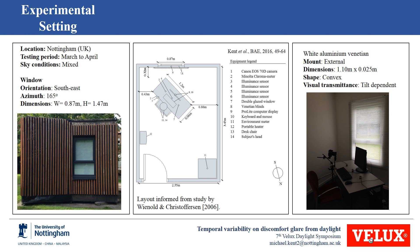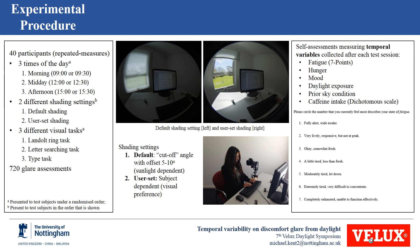Also inside the test room were white Venetian blinds, which could be manually operated by the participants. Before participants arrived, the blinds were always adjusted to ensure predominantly diffused daylight conditions within the test room. Each participant participated under two different shading settings: a default cutoff angle ensuring no direct sunlight entered the room, and a user-set shading where participants could adjust the Venetian blinds to their own visual preference.